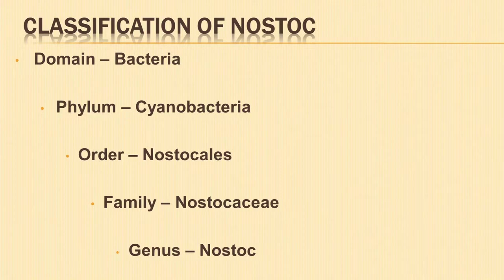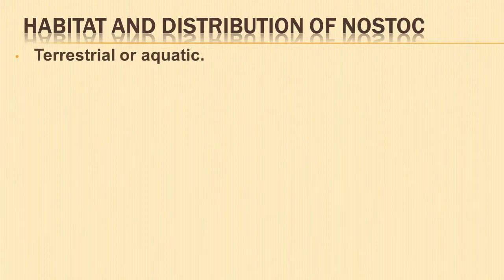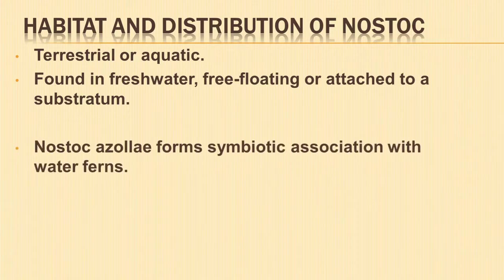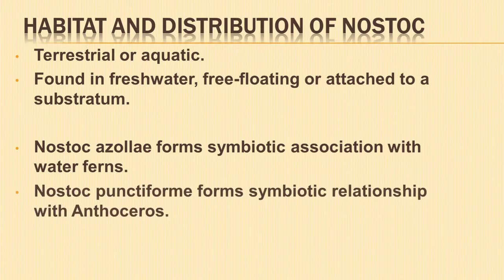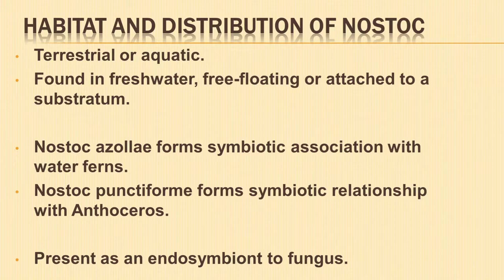Genus Nostoc shows numerous filaments embedded in a gelatinous sheath. Nostoc are found in a variety of environments — they may be both terrestrial and aquatic. They are found mainly in freshwater as free-floating or attached to a substratum. They are also found on tree trunks. Nostoc azollae forms a symbiotic association with water ferns, and Nostoc punctiforme forms a symbiotic relationship with Anthoceros. They are also present as an endosymbiont to fungus.